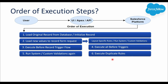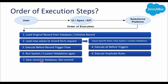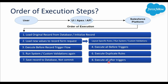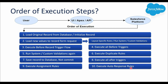After before triggers run, Salesforce executes system and custom validations again — excluding layout-specific rules — because before flows or triggers can update current record values, potentially violating validation rules. Then duplicate rules are executed; if a duplicate is found, the request is returned without saving. If no duplicate is found, the record gets saved to the database temporarily, pending commit, so it can be rolled back if issues arise. Next, Salesforce executes all after triggers.